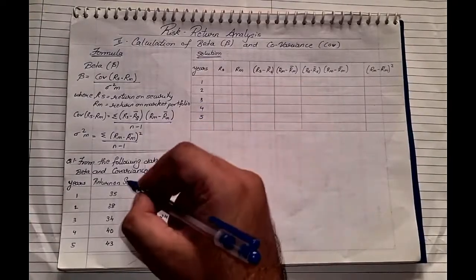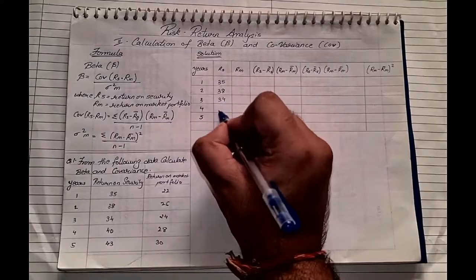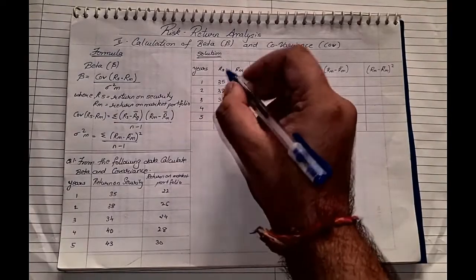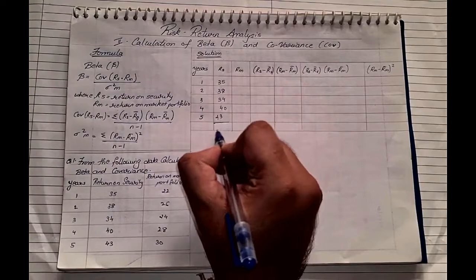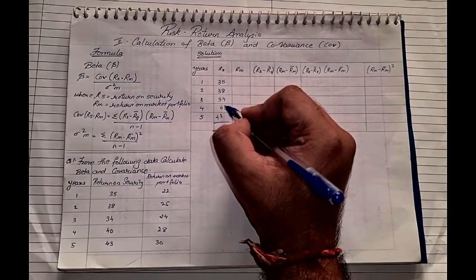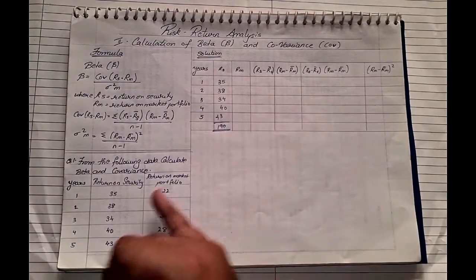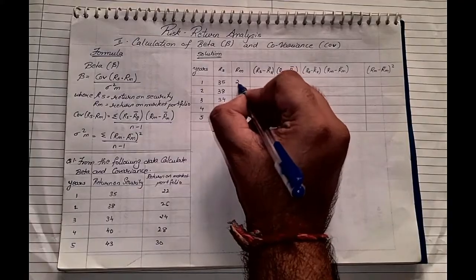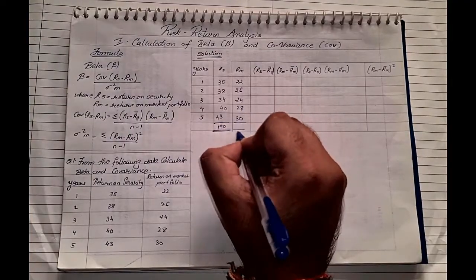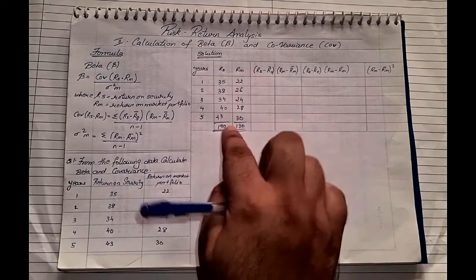We have five years: 1, 2, 3, 4, and 5. Under return on security we write: 35, 38, 34, 40, and 43. Adding them up: 35 plus 38 plus 34 plus 40 plus 43 gives a total of 190. Similarly, we note down the market portfolio returns: 22, 26, 24, 28, and 30. Totalling those gives approximately 130.